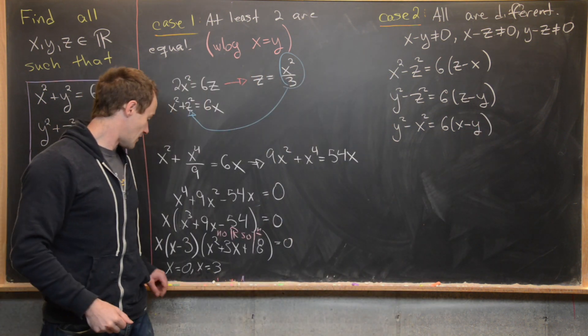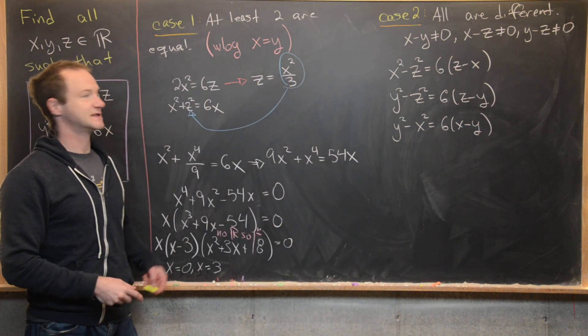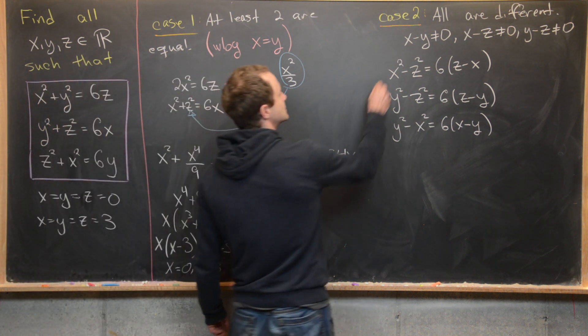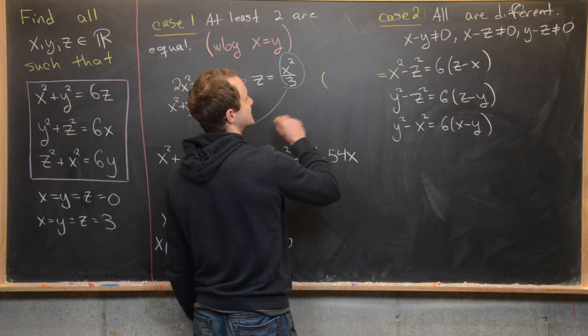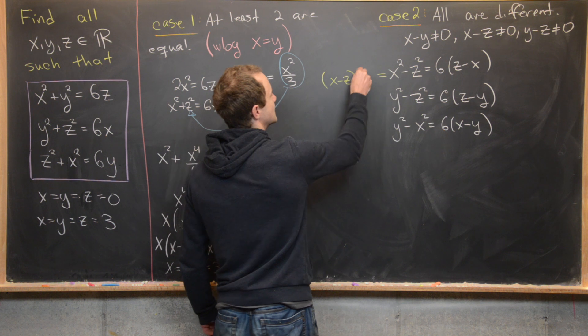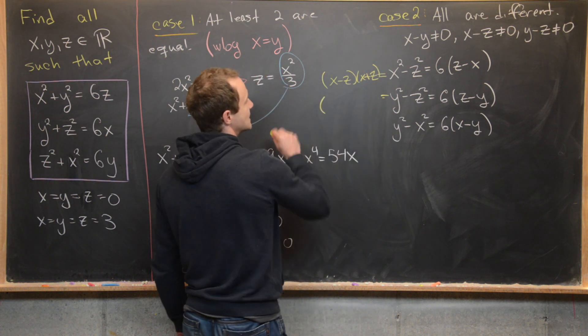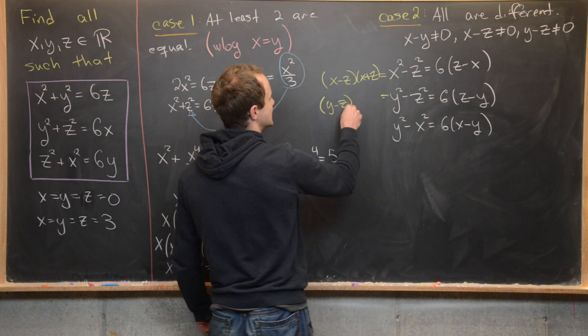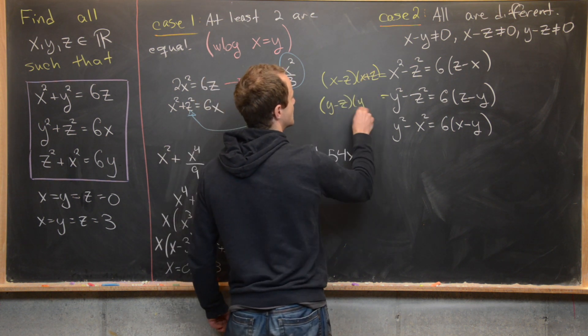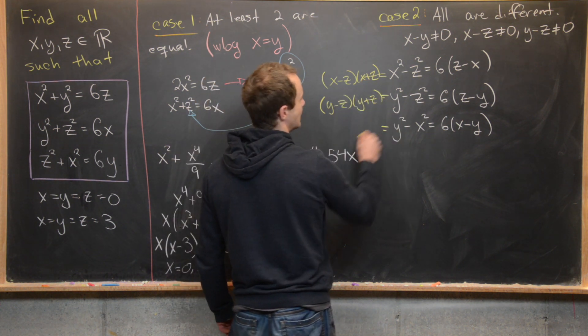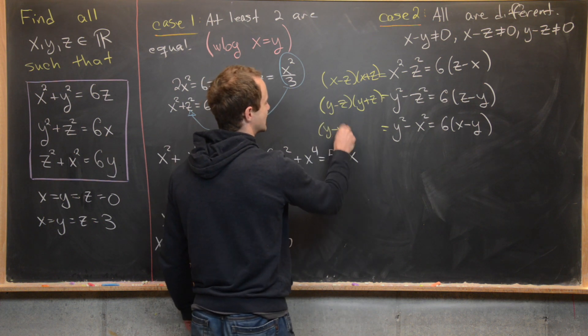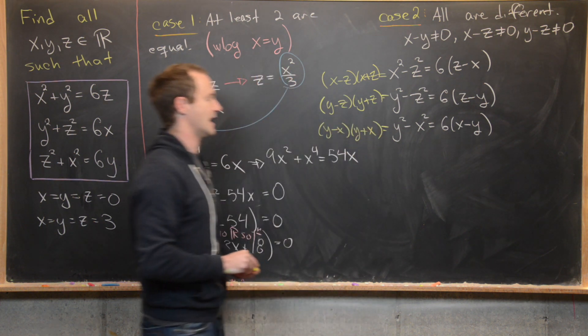Now, like I said, we're really trying to build up this difference of squares factoring. So let's go ahead and factor this into (x - z)(x + z). And then we'll do the same thing here, so this is going to be (y - z)(y + z). And then this one right here is going to be (y - x)(y + x) like that.